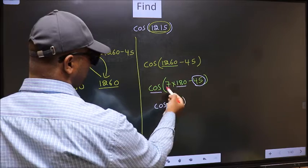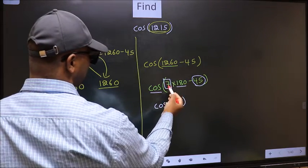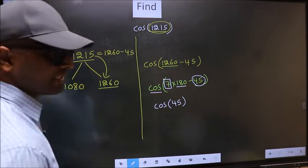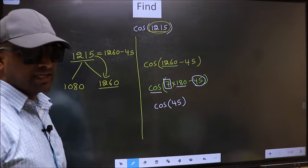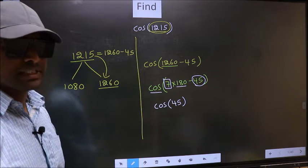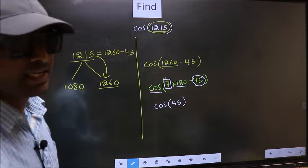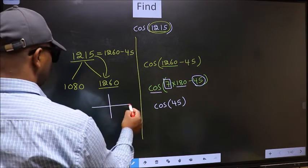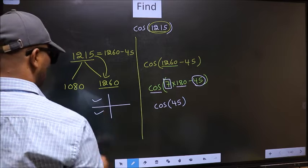To answer that, we should look at the number before 180, that is 7. And 7 is odd, and all the odd multiples of 180 they lie in either the second or the third quadrant.